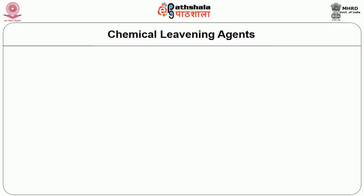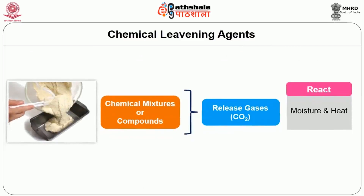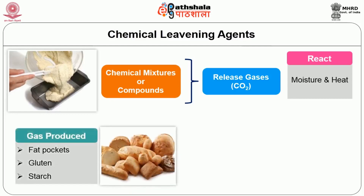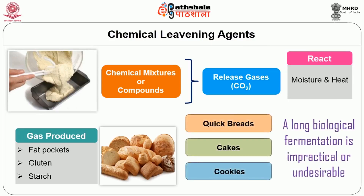Chemical leavening agents are chemical mixtures or compounds that release gases, usually carbon dioxide, when they react with moisture and heat. The gas produced is held by fat pockets, gluten, and starch, which makes the baked product rise. Chemical leavening is used in quick breads, cakes, cookies, etc., where a long biological fermentation is impractical or undesirable.